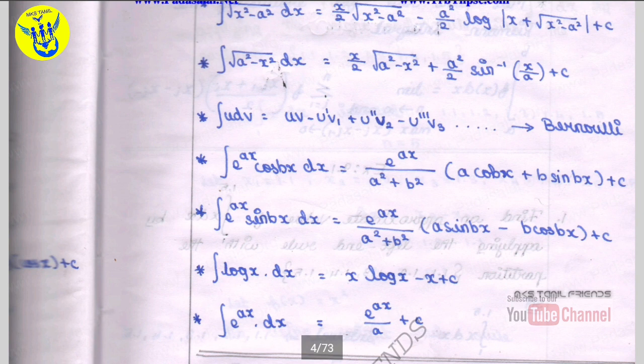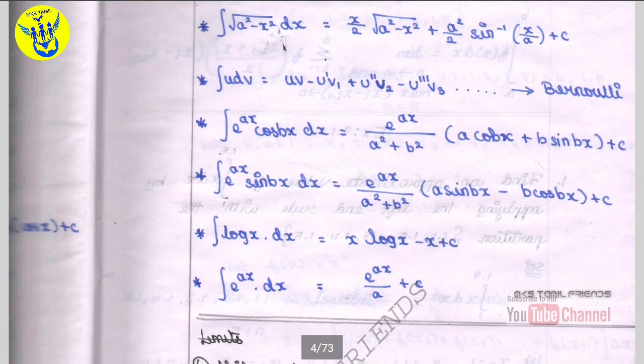Integral u dv is equal to uv minus u dash v1 plus u double dash v2 minus u triple dash v3. This is Bernoulli's formula. Integral e power ax cos bx dx is equal to e power ax by a square plus b square times a cos bx plus b sin bx plus c.